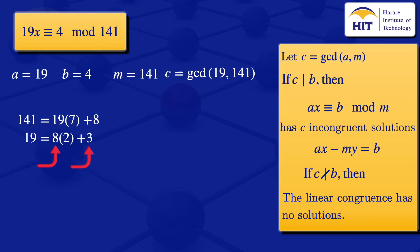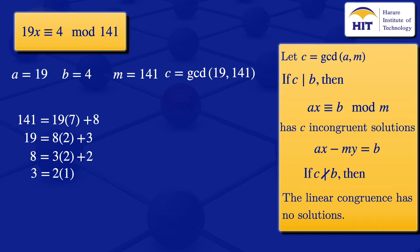Continuing the Euclidean algorithm: 8 = 3 × 2 + 2, since 8 − 6 = 2. Then 3 = 2 × 1 + 1, since the floor of 3 divided by 2 is 1, giving remainder 3 − 2 = 1.